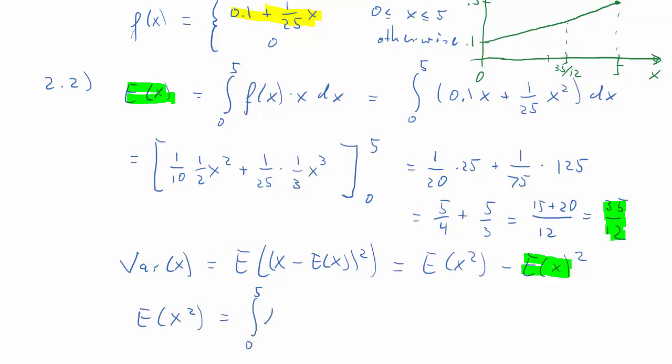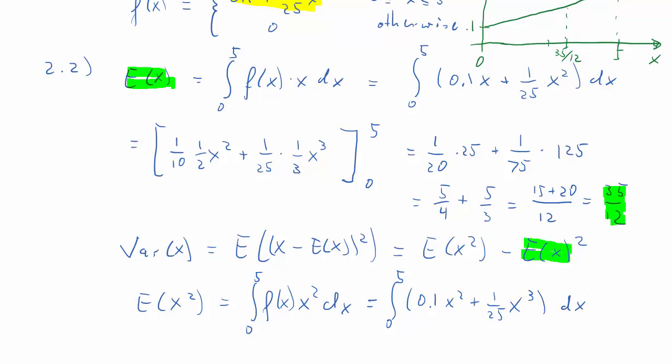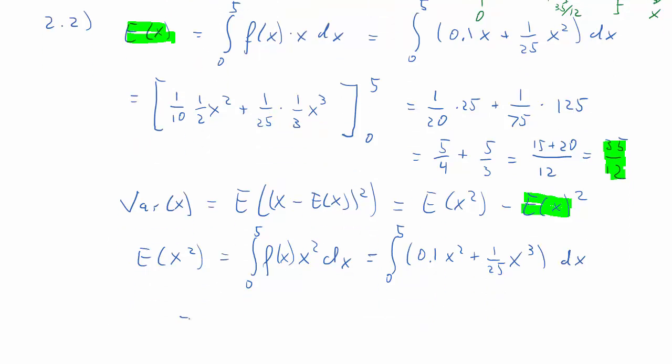And for the time being, all we need to solve is the expected value of X squared. And that's the integral of f(x) times x squared dx, again, evaluated over the entire support. So that's 0.1x squared plus 1 over 25 x to the 3 dx. So, same as before, we need to find the integrand of that function. And it's still pretty easy. That's 1/10 times 1/3 times x to the power of 3, 1 over 25 times 1 over 4 times x to the 4.